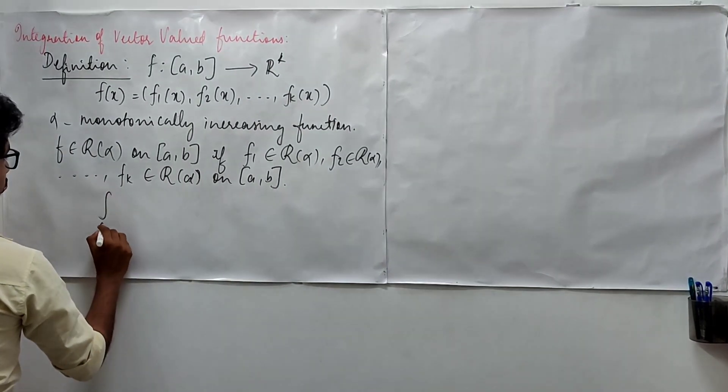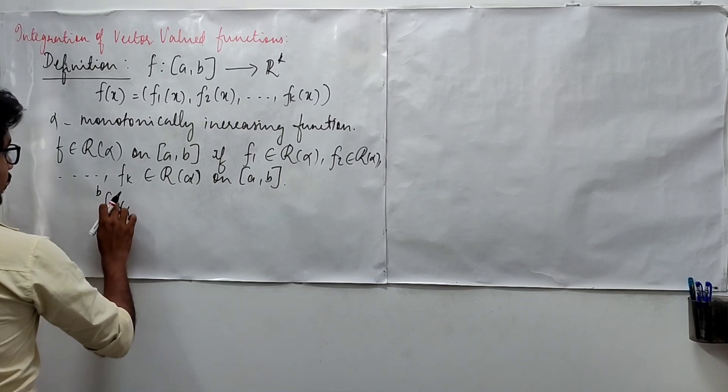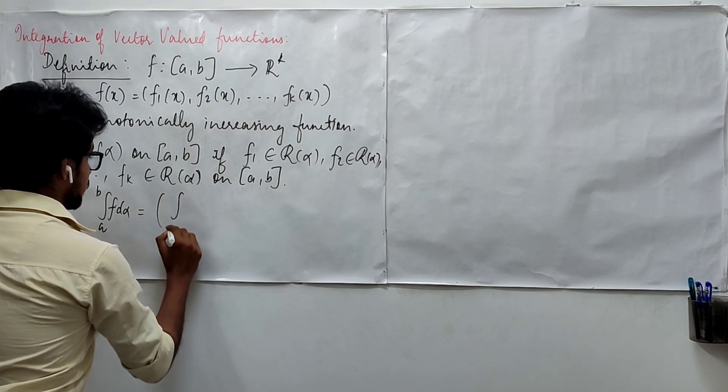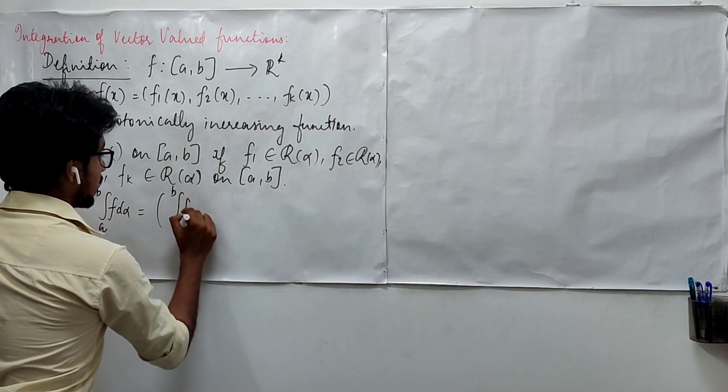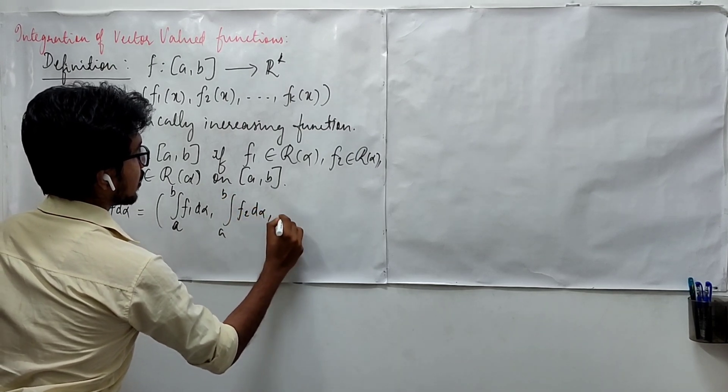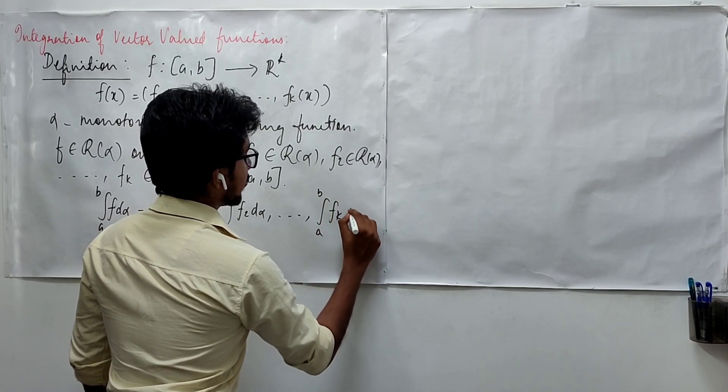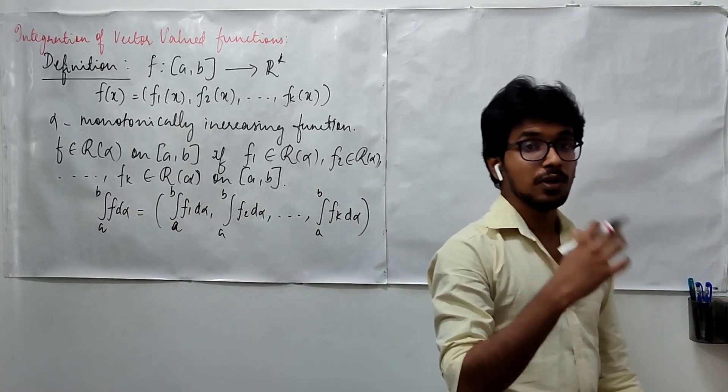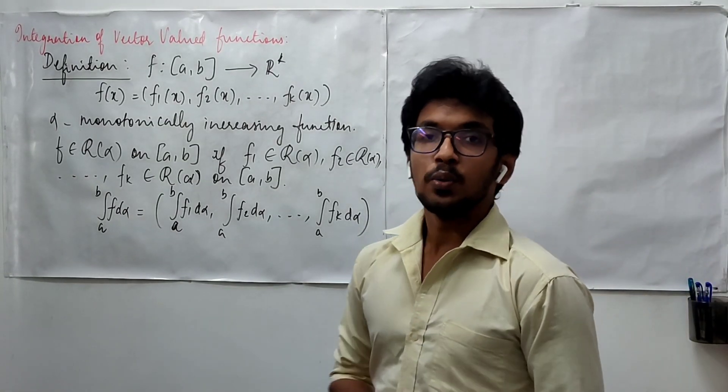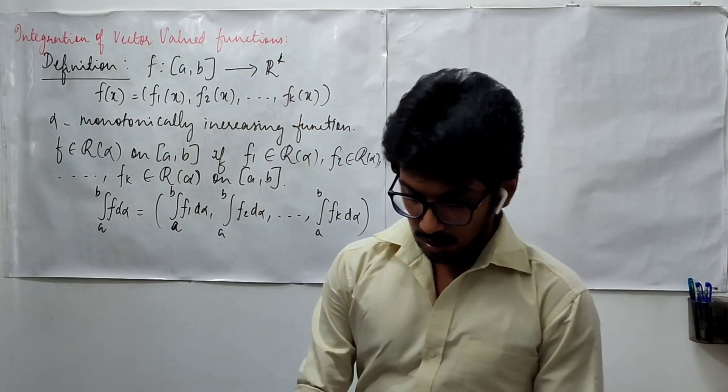And what is going to be integral a to b f d alpha? We know that f is the vector valued function here. It is integral a to b f1 d alpha, integral a to b f2 d alpha, till integral a to b fk d alpha. So, this is how we define the integration of vector valued functions, which is defined in this space R^k.